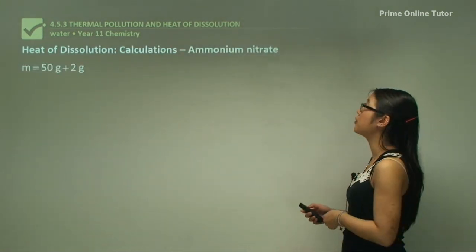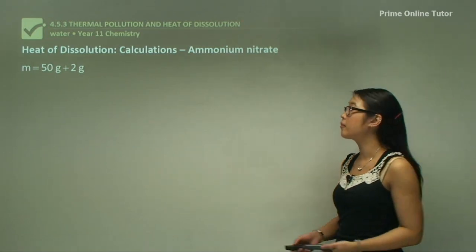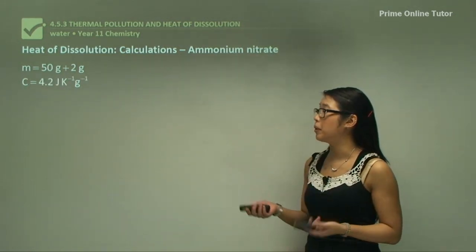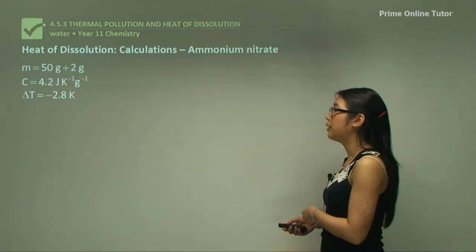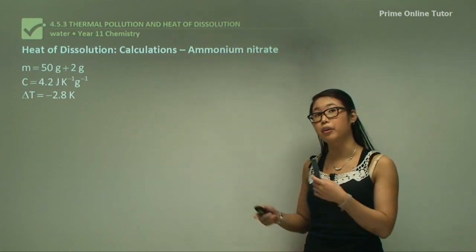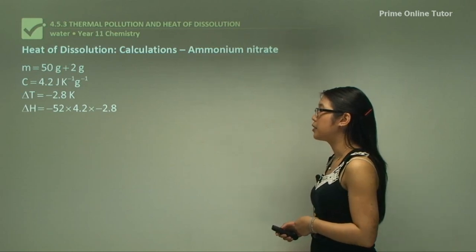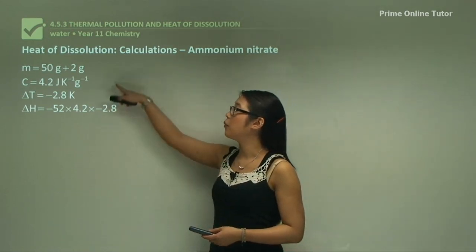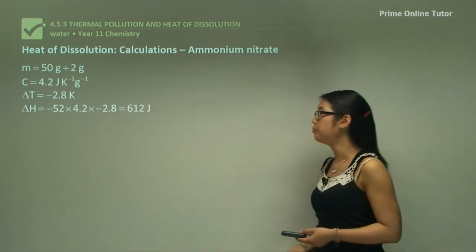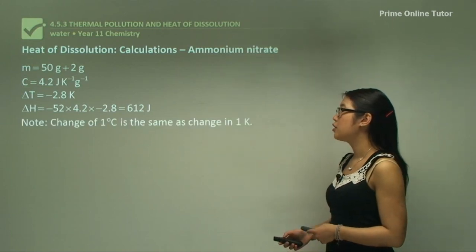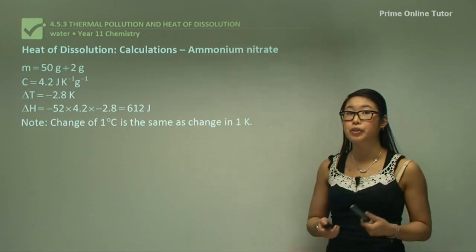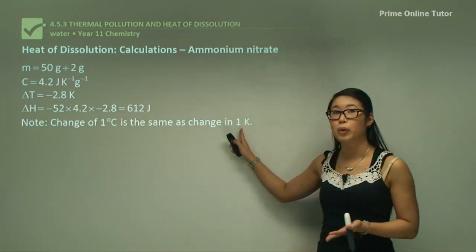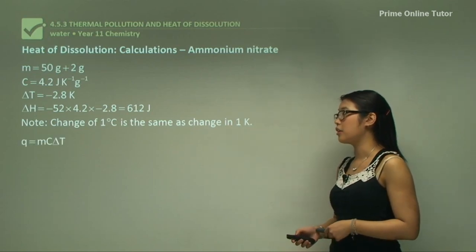So the calculations—what we do is firstly for ammonium nitrate, the mass is 50 grams of water plus the 2 grams that we added of the ammonium nitrate. Our specific heat capacity of water is 4.2 joules per Kelvin gram. And the change in temperature for ammonium nitrate was minus 2.8. So the change in enthalpy is 52 times 4.2 times minus 2.8, which is 612 joules. Just remember that the change of one degree Celsius is equal to the change in one Kelvin.